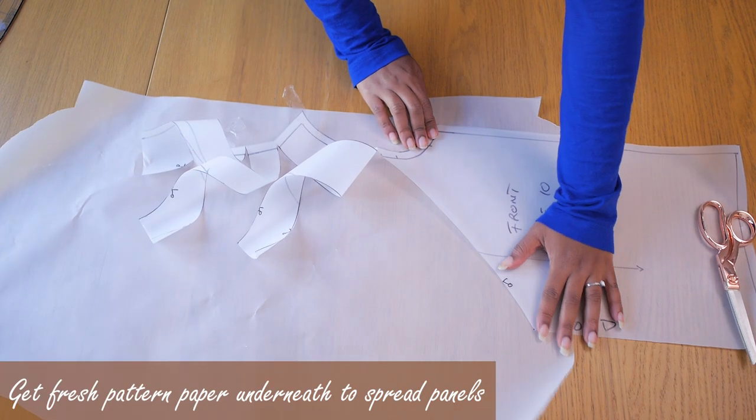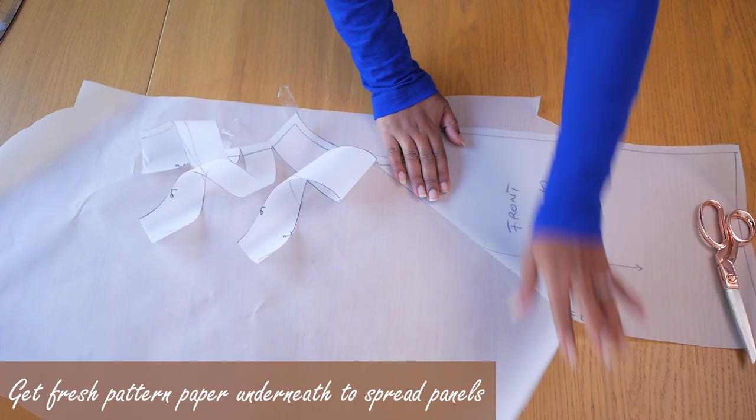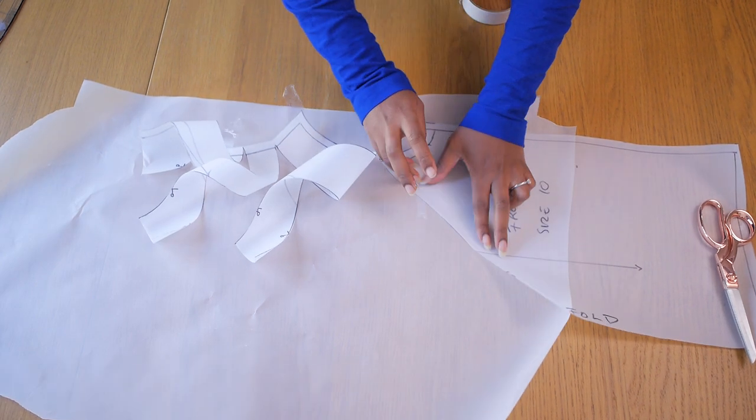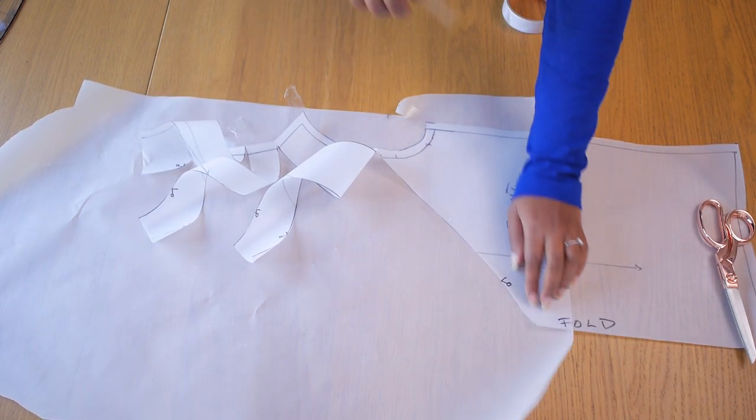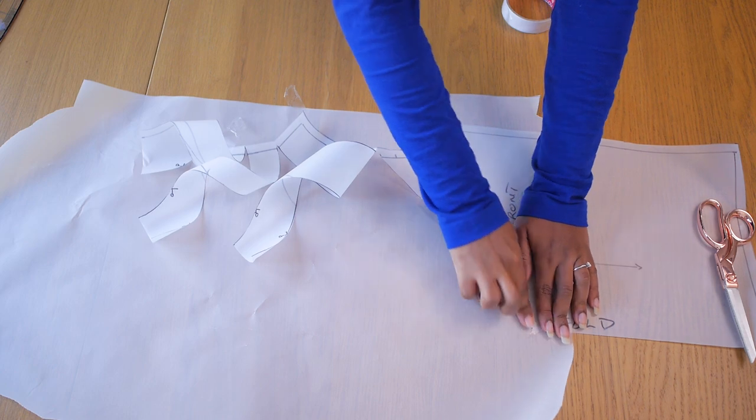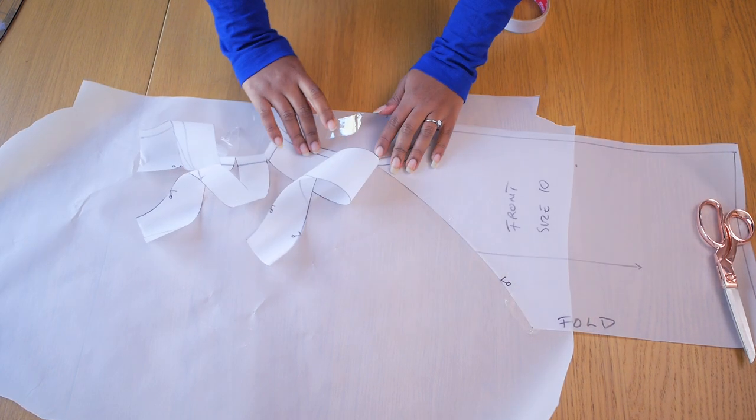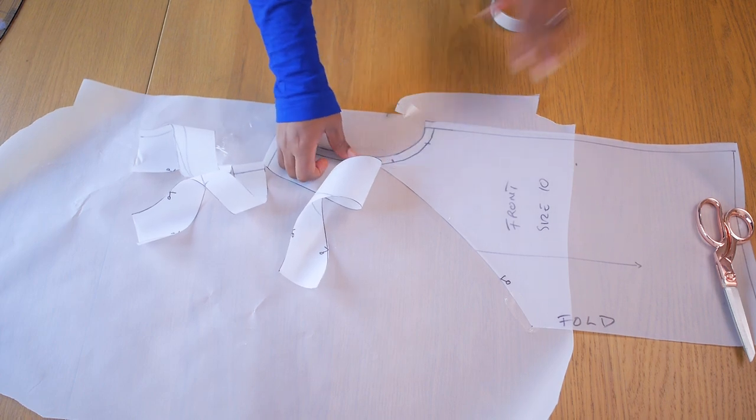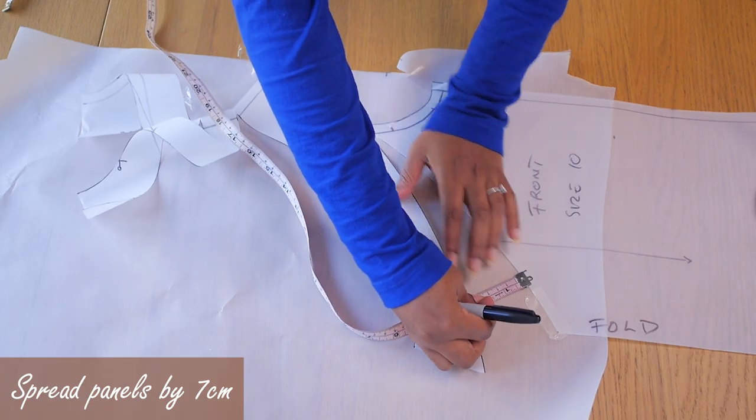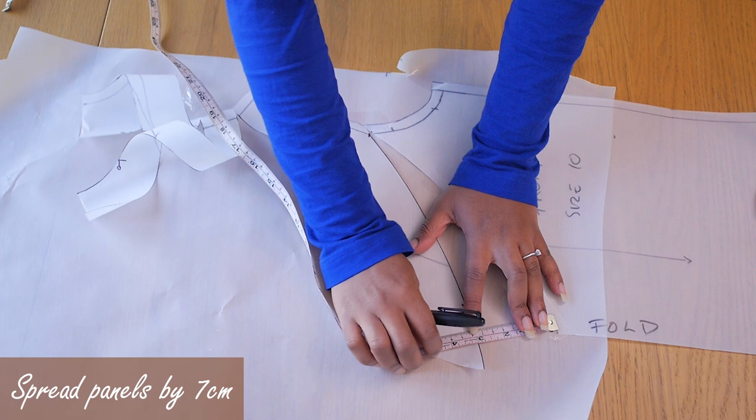So now that I have all of my panels in place, a total of three, I'm going to be spreading them onto fresh pattern paper. So I've cut some fresh pattern paper here wide enough to take the spread of my design and I've taped down the first panel. So I'm just taping down the edge of this large bottom piece here so it stays put while I'm spreading the rest of the smaller panels on top. So I'm just grabbing some more tape and I'm going in to spread the panels by seven centimeters.